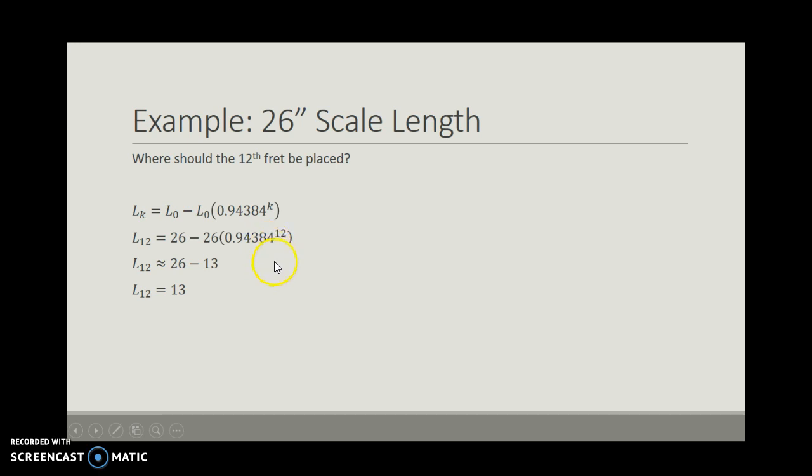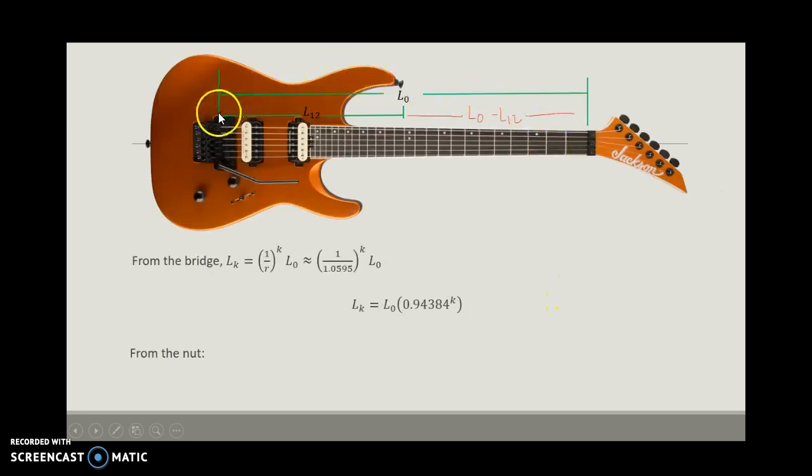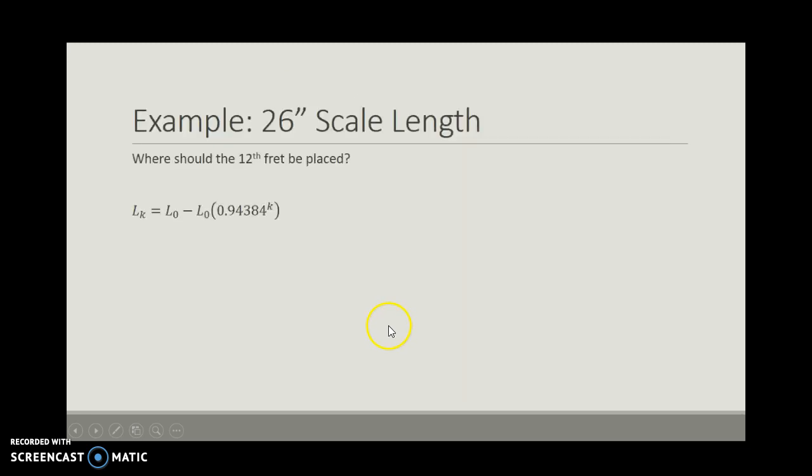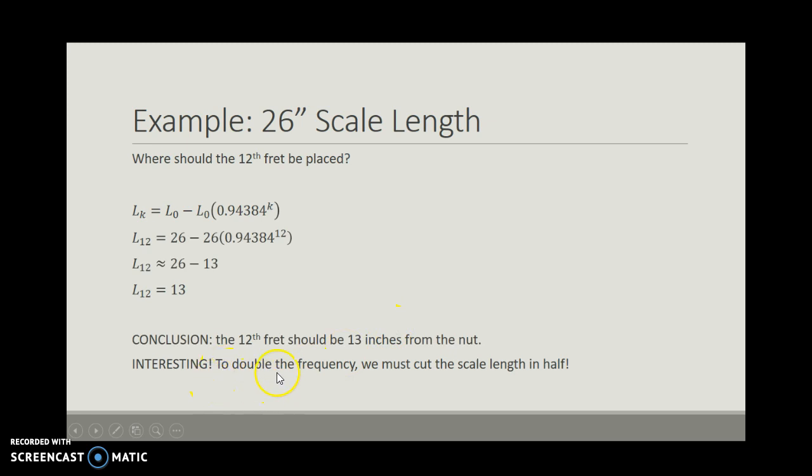Well, that's kind of interesting. But let's do a conclusion first. The 12th fret should be 13 inches from the nut. At the same rate, because the scale length is 26 inches, that also means that the 12th fret will be 13 inches from the bridge. So to put this in an interesting context, to double the frequency, because remember the 12th fret represents the doubling of the frequency, we must cut the scale length in half. That's a really interesting concept.